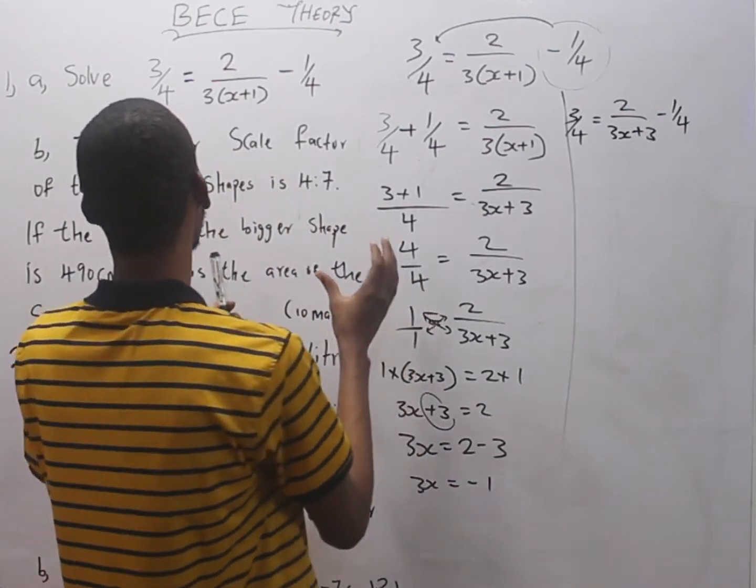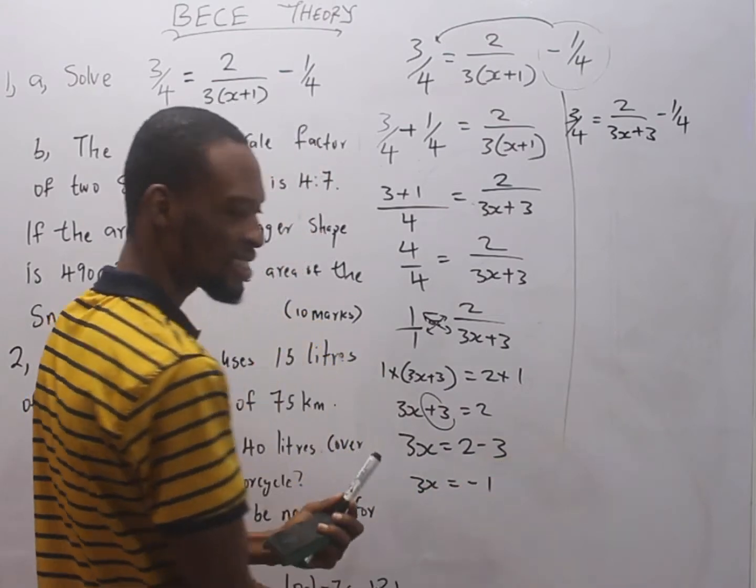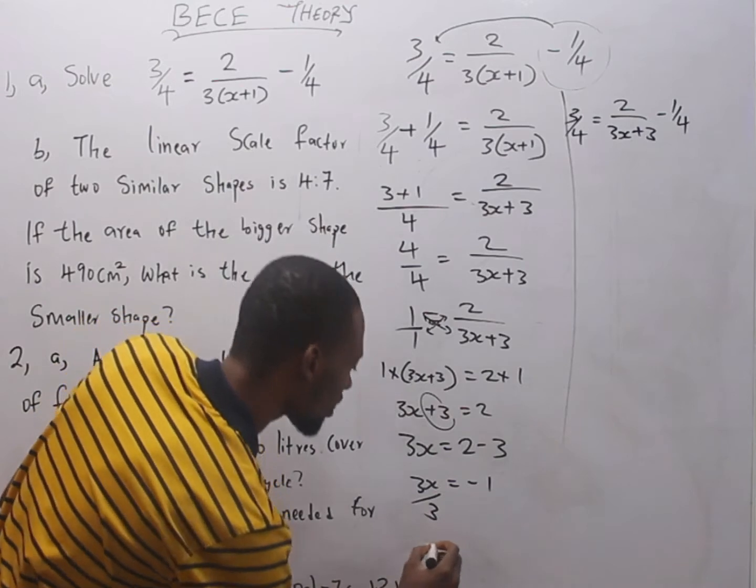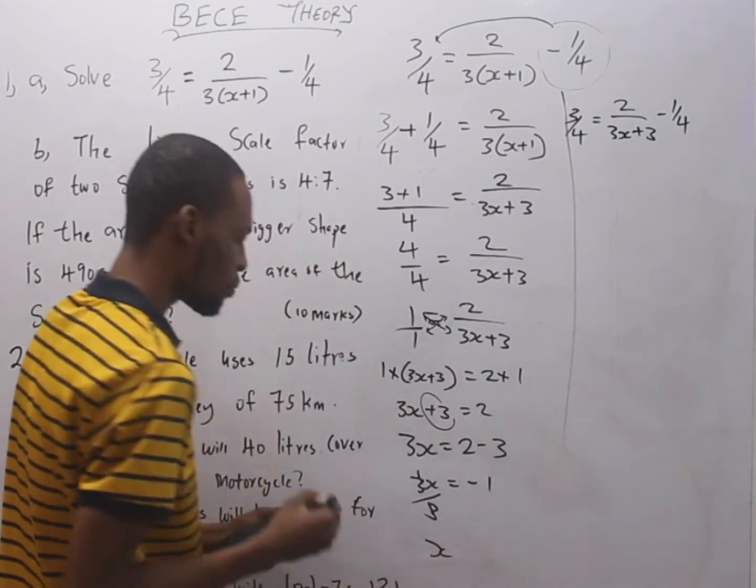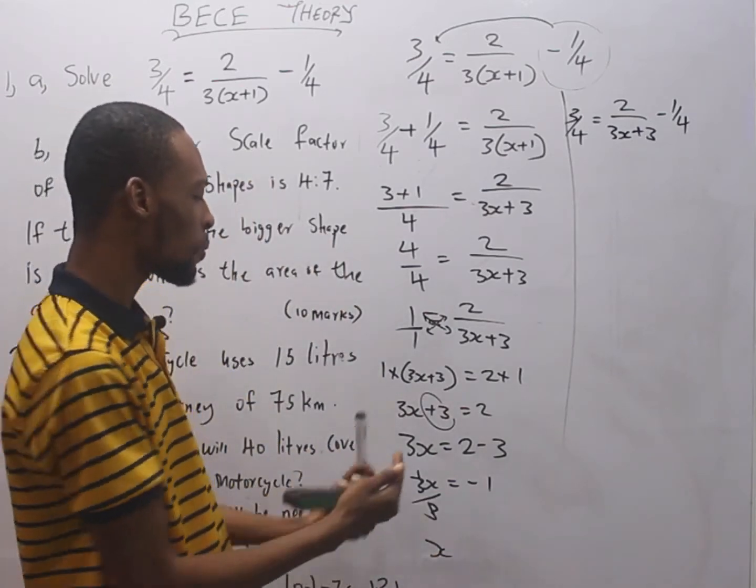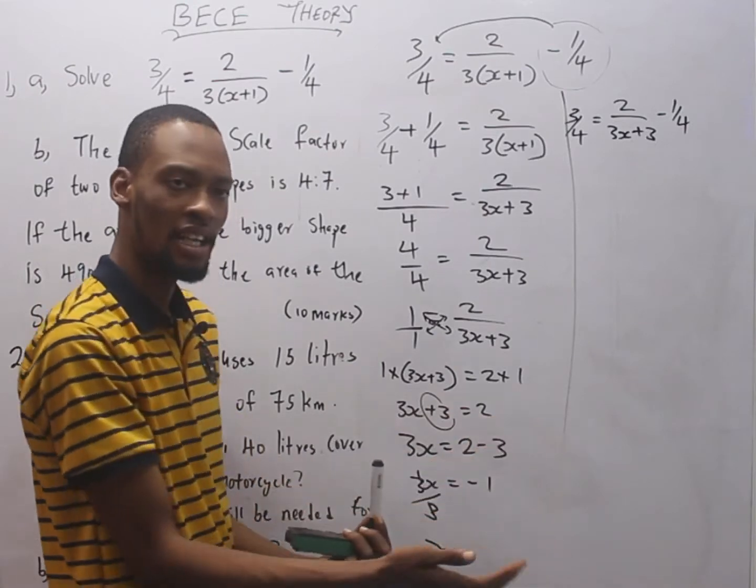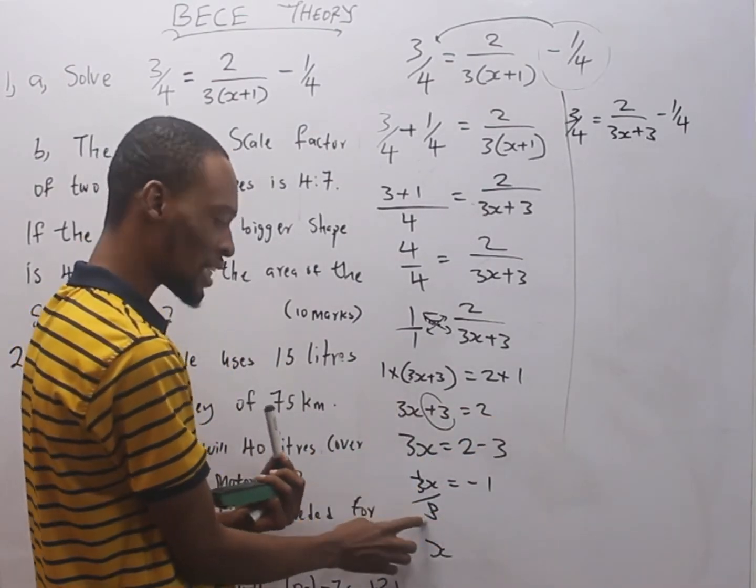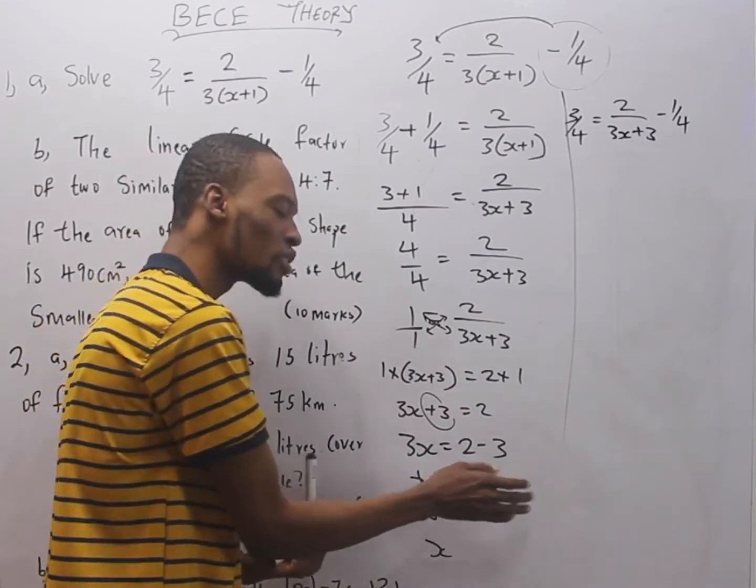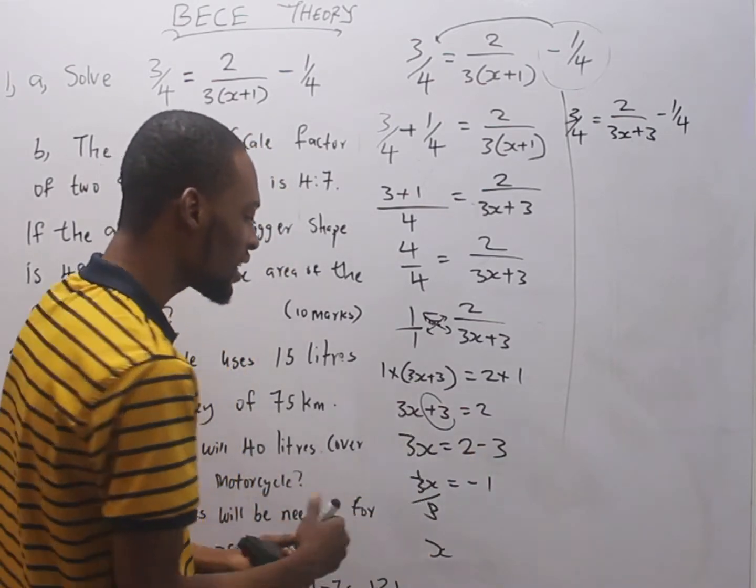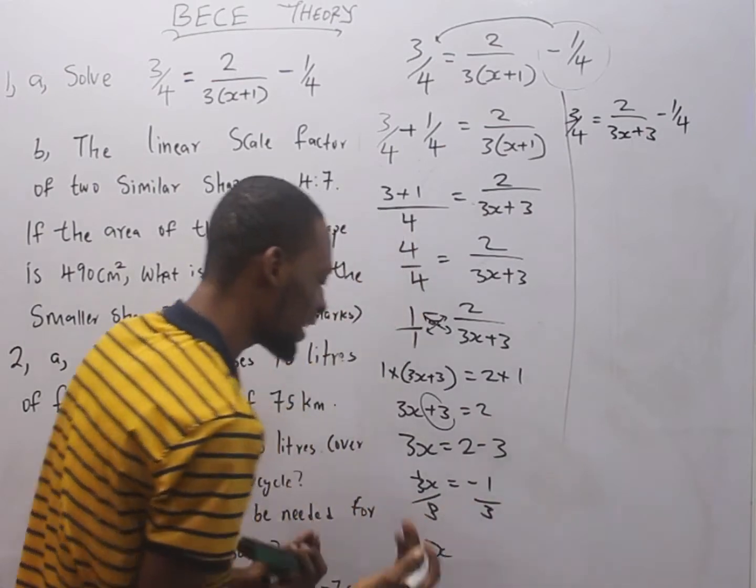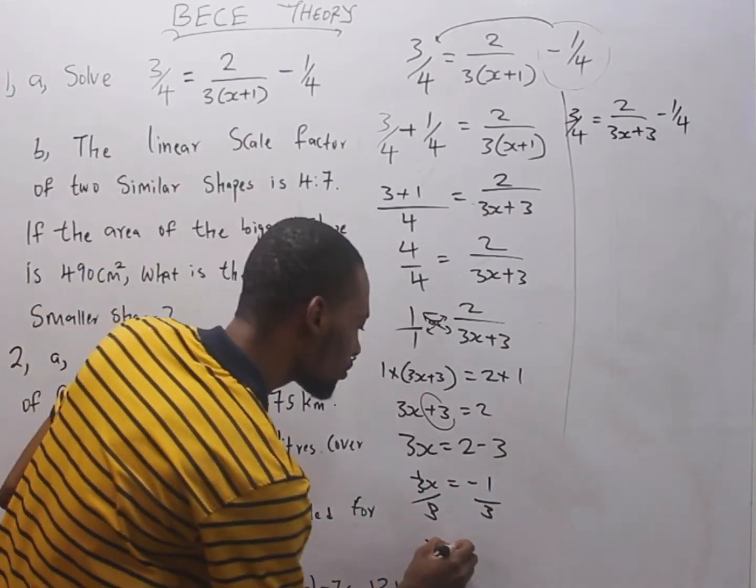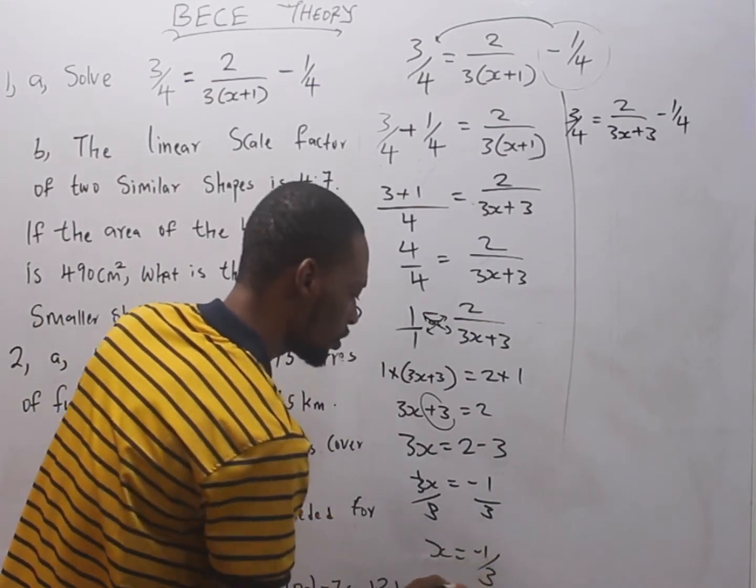We are looking for the value of s, not 3s. To get s alone, we divide 3s by 3. That will give us s. In an equation, what happens to this side should happen to the other side. So s equals minus 1 over 3.